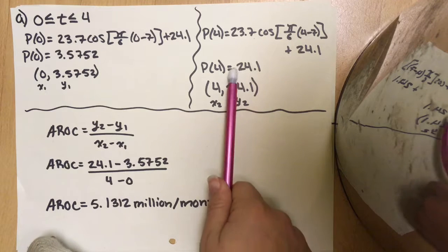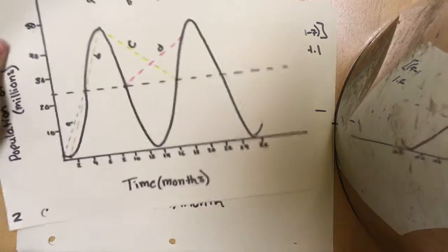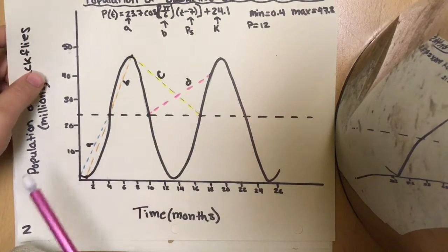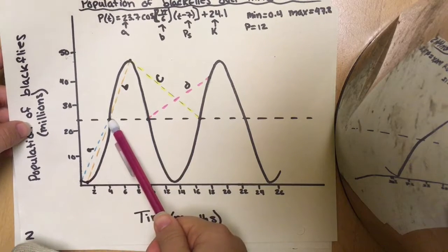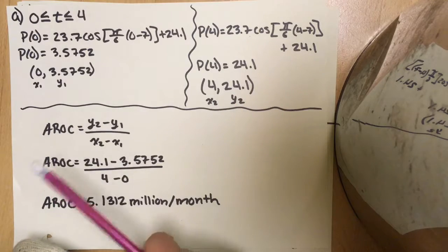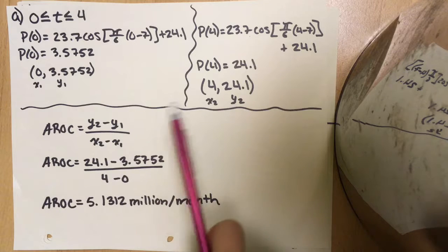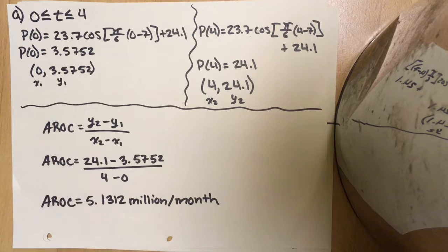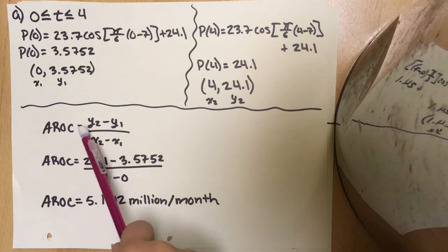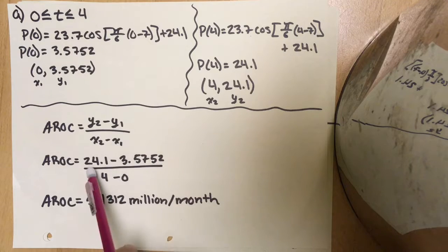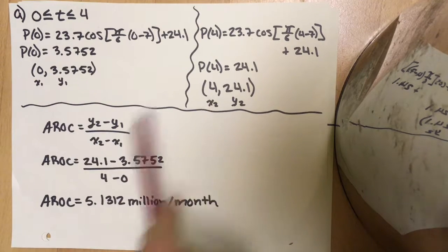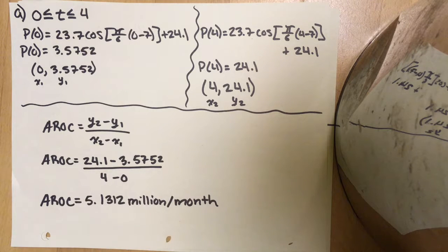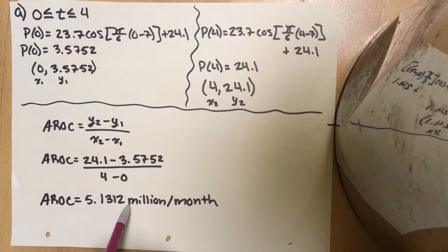After putting into my calculator correctly, I get this as my y value. So this is my first coordinate. I need to also do my second point. Here I've done my second point, solved for my y value, and I get 24.1. Something special about this number is that it actually equals our equation of axis. We can see that 4 lands right on our equation of axis. I calculate my average rate of change, which is our slope. I get 5.1312 million per month. That means the blackfly population is increasing between this time interval by 5.1312 million blackflies per month.